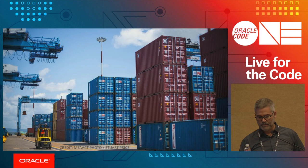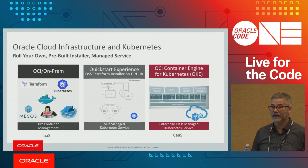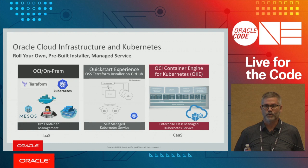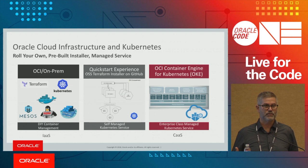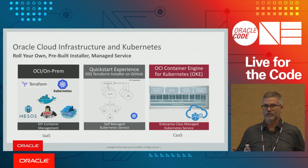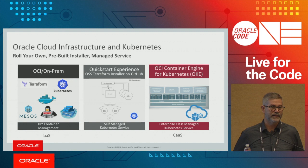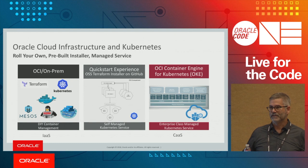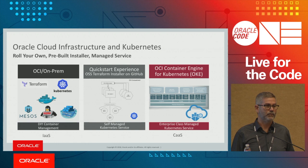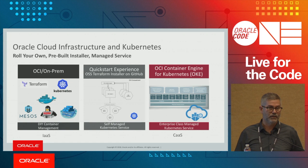The middle option is a Terraform installer for use on Oracle Cloud Infrastructure, the Gen 2 cloud, making it easy to get something up and running. On the far right is Oracle Container Engine for Kubernetes — OKE — which is a fully managed service. You come to Oracle Cloud, request a Kubernetes cluster, and we spin it up so you can deploy applications using kubectl.